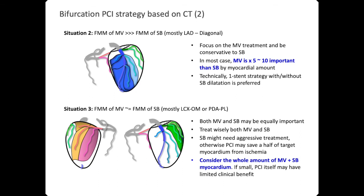Situation 3: if both the myocardial mass of the main branch and side branch are similar but both are small — most circumflex OM or PD-APL bifurcations — both may be equally important. Please treat both vessels wisely. The side branch might need aggressive treatment; otherwise PCI may save just half of the target myocardium. Also consider the whole amount of main branch and side branch myocardium — if both are so small, PCI itself may have very limited clinical benefit.